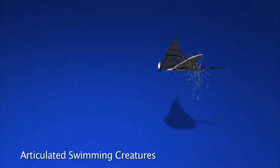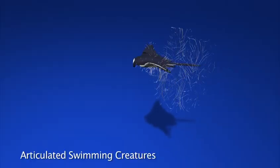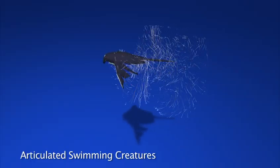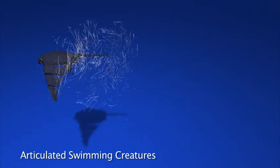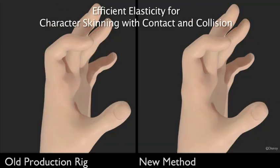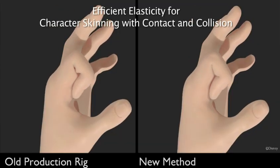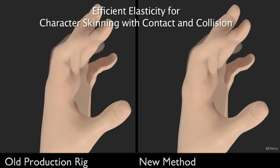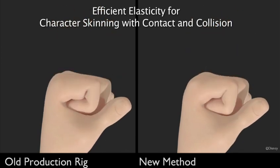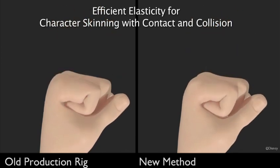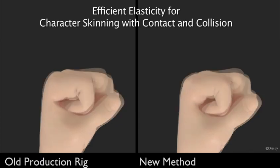The controllers that allow this manta ray to swim efficiently are found automatically via optimization. Rigging a hand for production is difficult because of collisions, but a new elasticity-based deformer gracefully handles collision for deformable soft tissue.